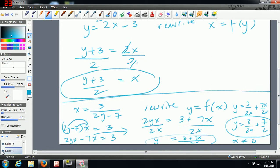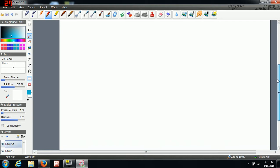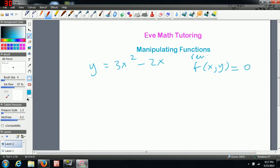Or you could be asked to write the equation in the following form. So you could get an example where you've got y equals 3x squared minus 2x and asked to write this equation in the form f of x, y equals 0.